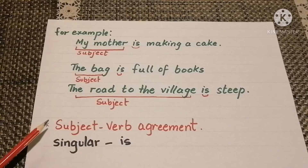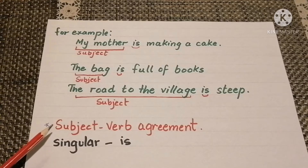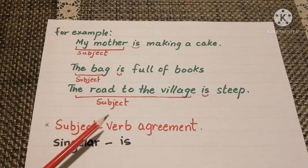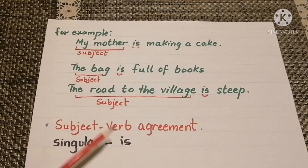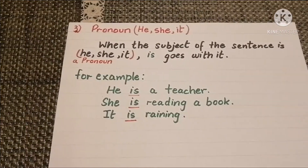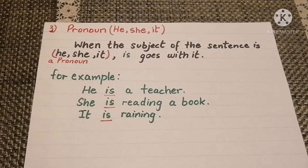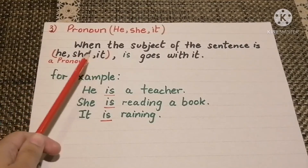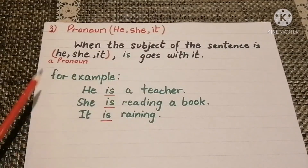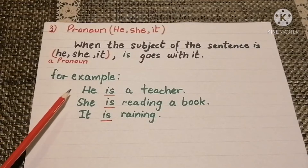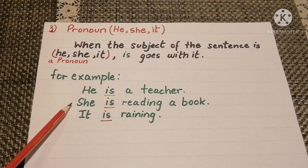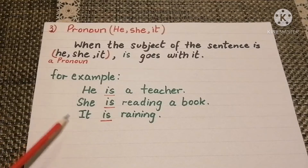So what we learned here is subject-verb agreement: when the subject of a sentence is singular, we use 'is' as a verb to complete the sentence. We also use 'is' when the subject is a pronoun — he, she, or it. 'Is' goes with these pronouns. For example: he is a teacher, she is reading a book, it is raining.